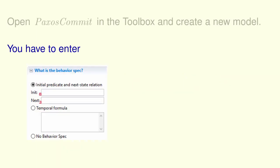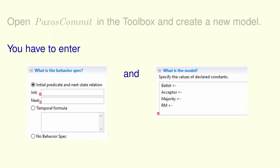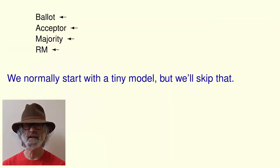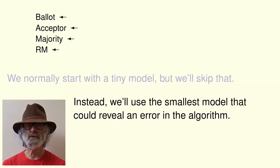Open module Paxos commit in the toolbox and create a new model. You have to enter the initial and next state formulas and the values of the constants. The initial and next state formulas are named PCInit and PCNext. Now, for the values assigned to the constants. We normally start with a tiny model, but we'll skip that. Instead, we'll use a model which, if you understand the algorithm, you'll see is the smallest one that could reveal a non-trivial error.